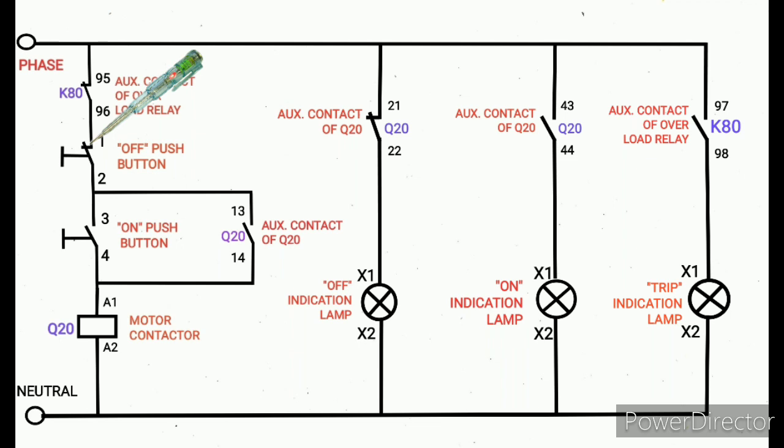Next, that off push button terminal number 1, we need to check. If the tester glows, okay, that line is okay. Next, that off push button terminal number 2 we need to check. Then it is okay. That NC off push button NC contact is okay.